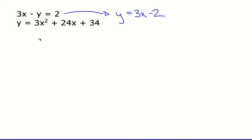Then I can equate, and I can say 3x squared plus 24x plus 34 equals 3x minus 2. Now I need to get all the terms on one side so that I can have 0 on the other side, and then I can try to solve the quadratic. Subtracting 3x from each side and then adding 2 to each side, I get 3x squared plus 21x plus 36 equals 0.